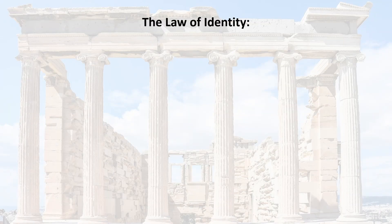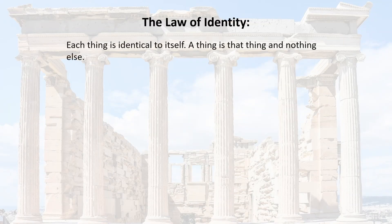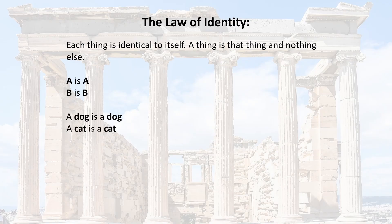First, the law of identity. This simply states each thing is identical to itself — a thing is a thing and nothing else. This is simplified to A is A, B is B. In other words, a dog is a dog, a cat is a cat.